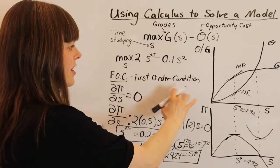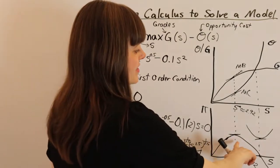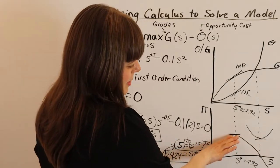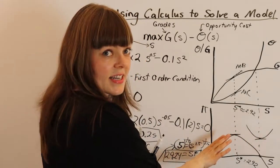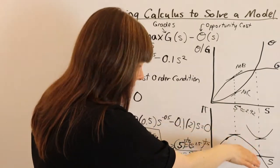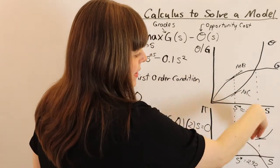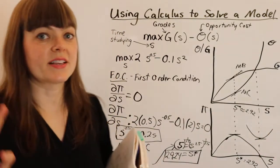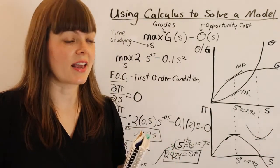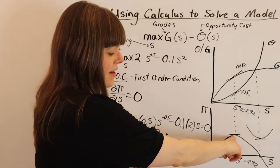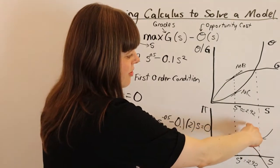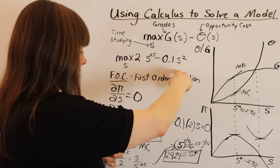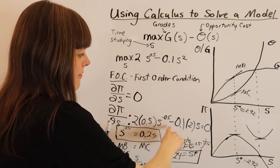That's our first order condition, but we need to take our second order condition to make sure this is a maximum rather than a minimum. We notice that when it's a maximum, the shape of the graph is concave - shaped a little bit like a cave. When it's a minimum, it's convex, shaped like a bowl. It's going to be concave when the second derivative is negative, and we want the second derivative to be negative since we're trying to find a max. If the second derivative were positive, we would find a min. So we just need to take the second derivative.